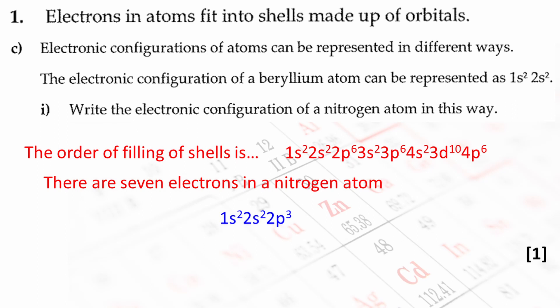The large numbers represent the shell or energy level. The lowercase letters represent the type of subshell and the superscript numbers represent how many electrons are in each subshell. There are seven electrons in the nitrogen atom so if you add up the superscript numbers you get a total of seven. So the answer is 1S2, 2S2, 2P3.